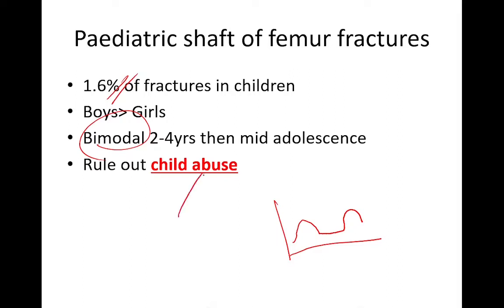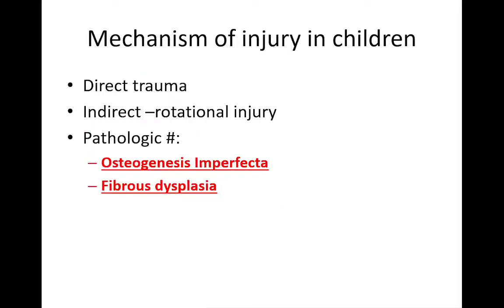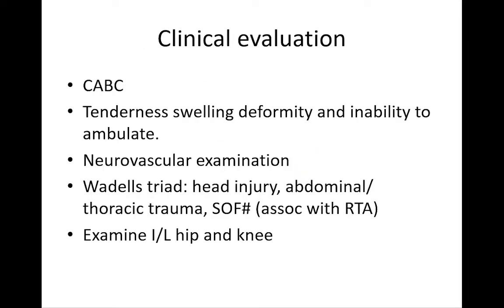It is very important to rule out child abuse. The mechanisms of injury in children include direct trauma, a rotational injury which can cause an indirect fracture, and pathological processes such as osteogenesis imperfecta and fibrous dysplasia.